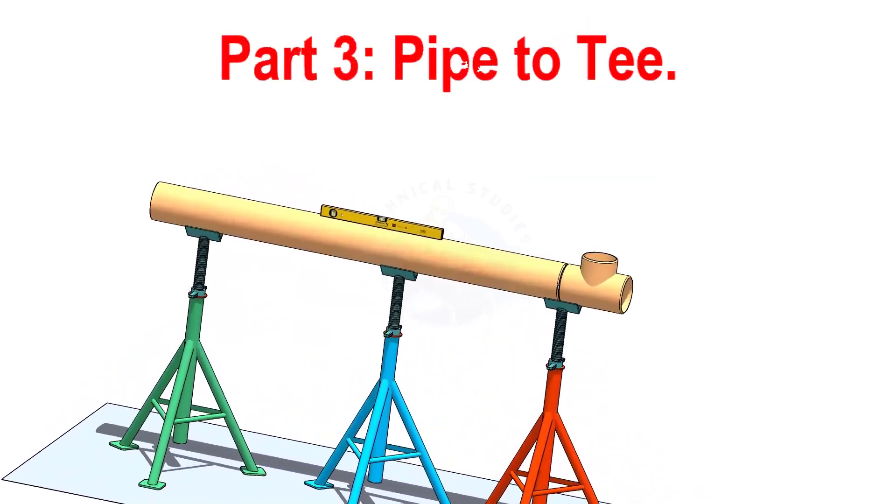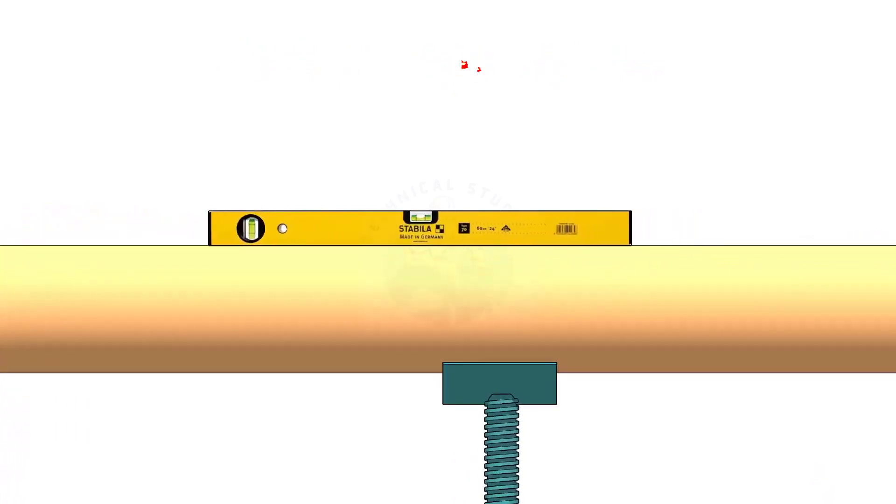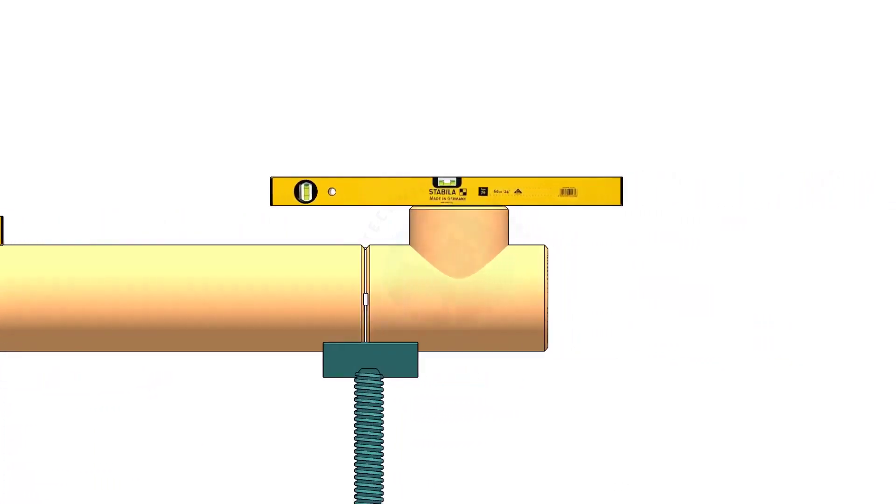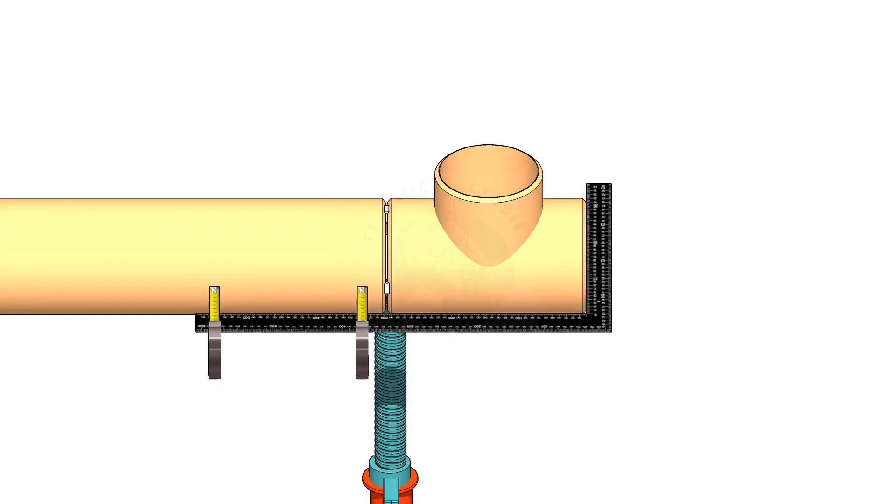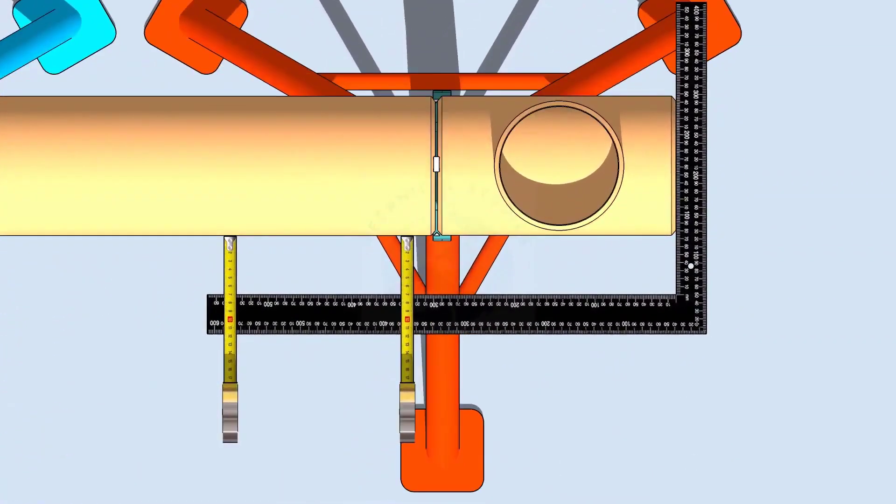When you check a pipe to T fit up, level the pipe first. Then check the level of the T. After that, hold a large right angle on the face of the T and measure if the distances are the same.